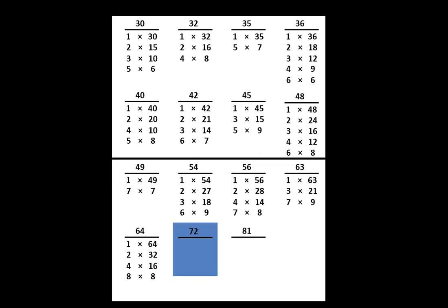On your paper, write that we can think of 72 as 1 times 72 or 2 times 36 or 3 times 24 or 4 times 18.